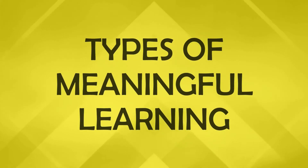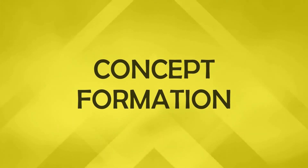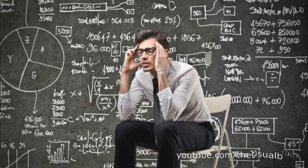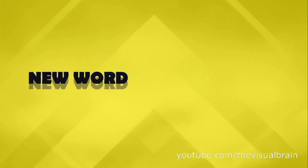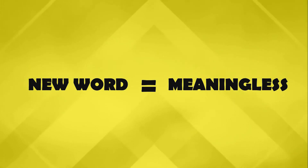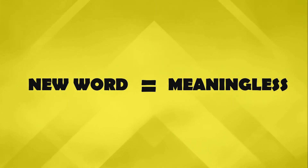Another point to keep in mind is that Ausubel distinguishes between three types of meaningful learning. The first is concept formation, which involves retaining the names of words and other symbols and associating them with what they represent. When one learns a word, it is meaningless without knowing what it represents. Concept formation is assigning a symbol to an idea — for example, seeing a cat and knowing it is called 'cat.'